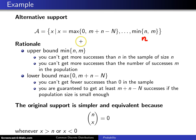The second thing to think about is the lower bound, and that is the maximum of 0 and m plus n minus capital N. And here is the thinking. You can't get fewer successes than 0 in the sample, so that's where 0 fits in.